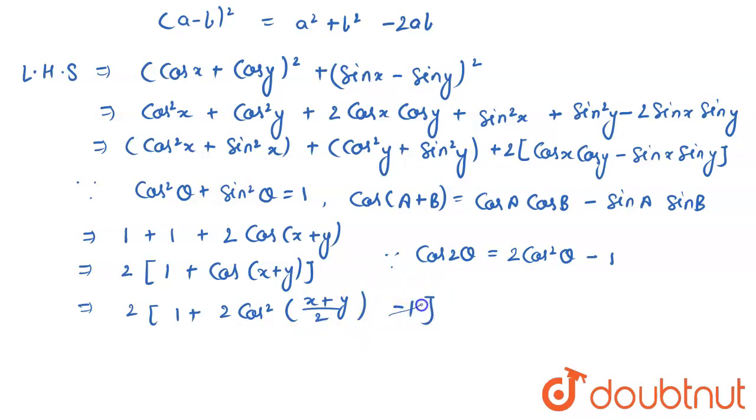Now this 1 cancels out and this term has become 4 cos²((x + y)/2), which is my RHS. Hence I have proven the given identity. Thank you for watching the video.